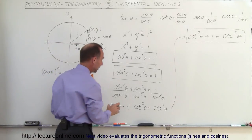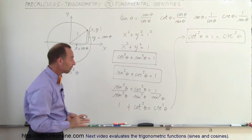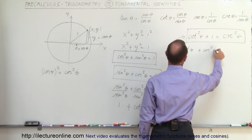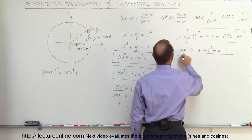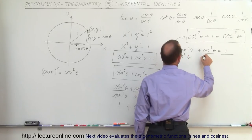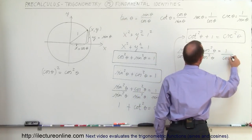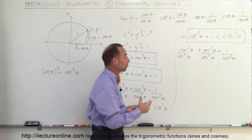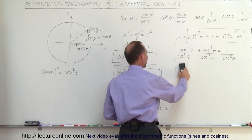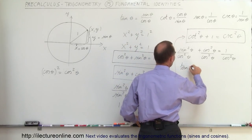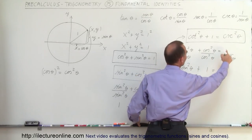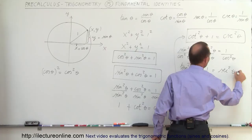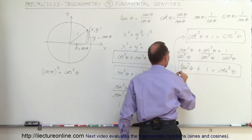Finally, we can reverse the process. Instead of dividing both sides by sine squared theta, we divide both sides by cosine squared theta. The sine squared over cosine squared gives us tangent squared of theta — note that sine divided by cosine is tangent, not cotangent. So we get tangent squared theta plus 1 equals secant squared theta, and there we have our third basic trigonometric identity.